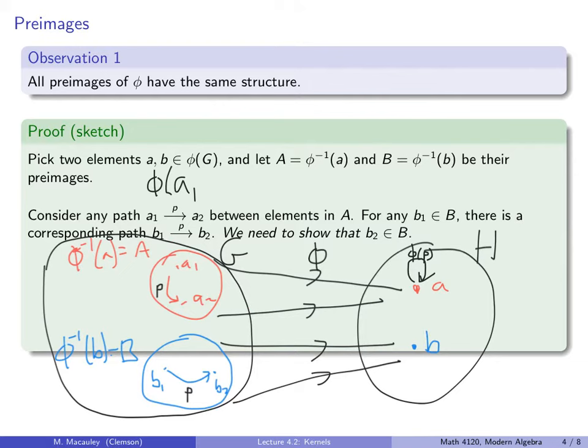Observation 3: something I mentioned earlier. The kernel of phi is a normal subgroup of G. That's why we didn't care whether we used left coset or right coset in the previous observation.